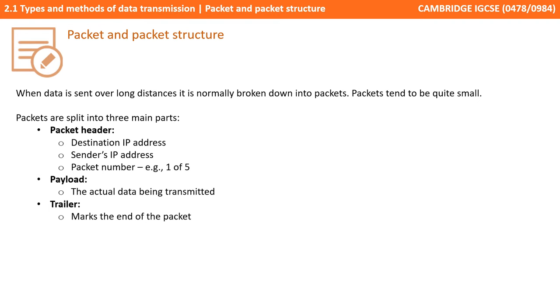So as a summary: when data is sent over long distances, it's normally broken down into small packets. They contain three parts — the packet header, the payload, and the trailer.